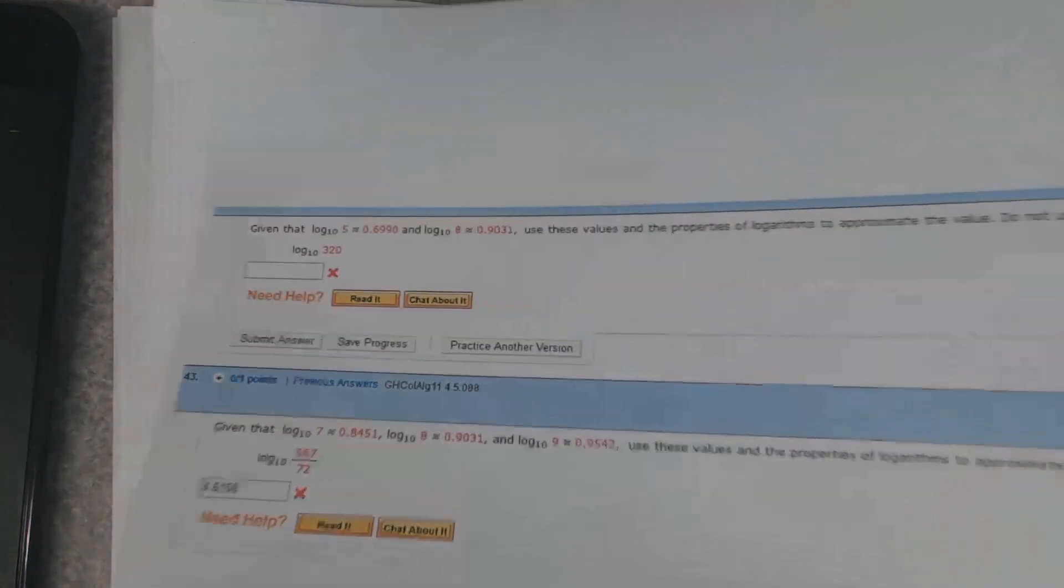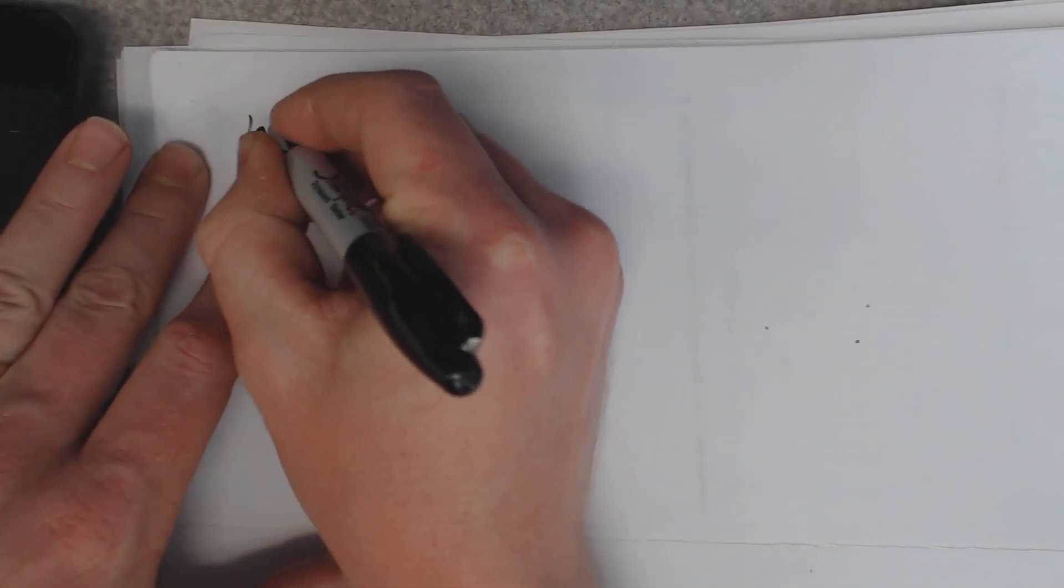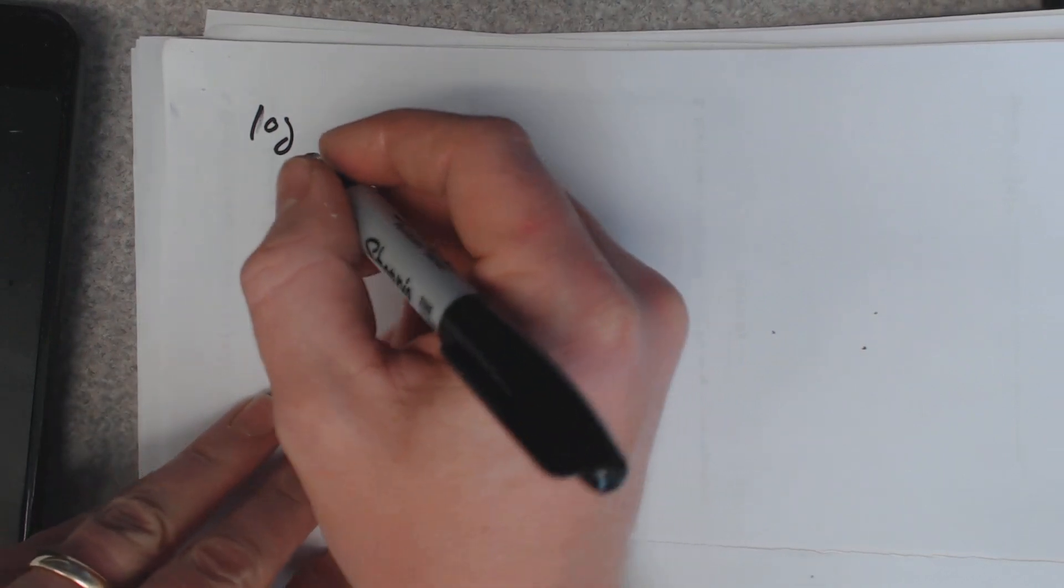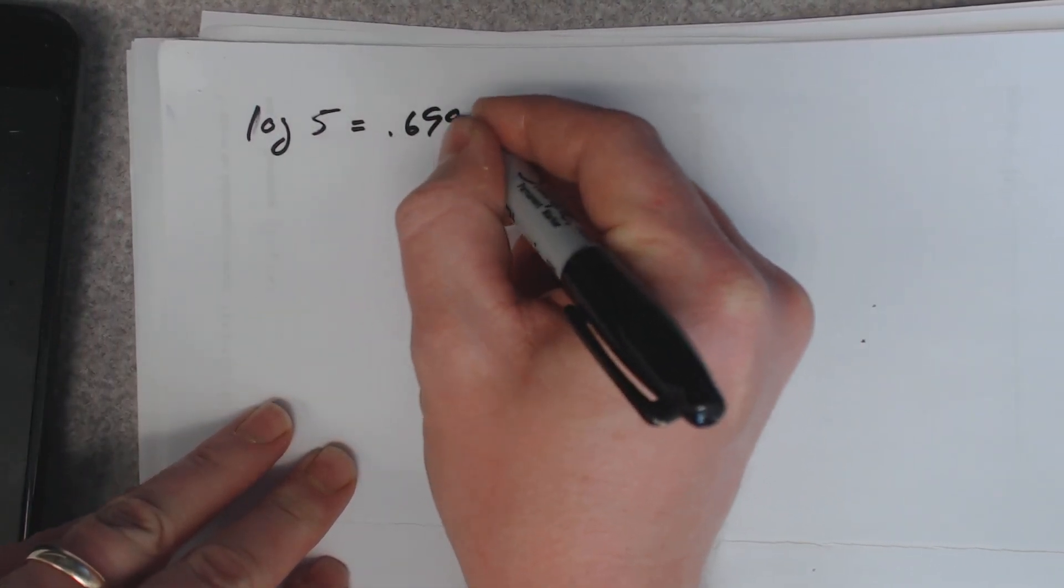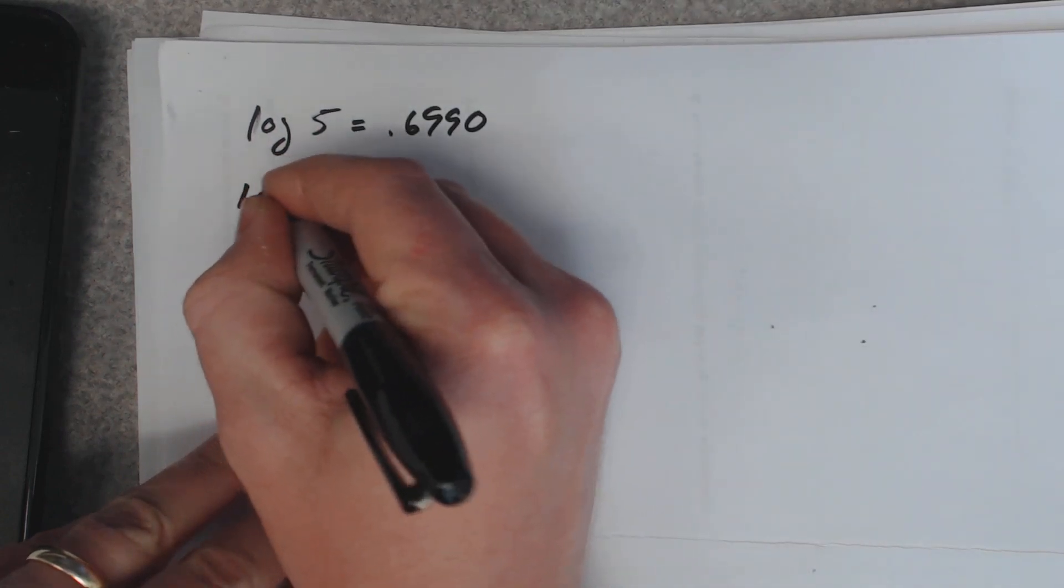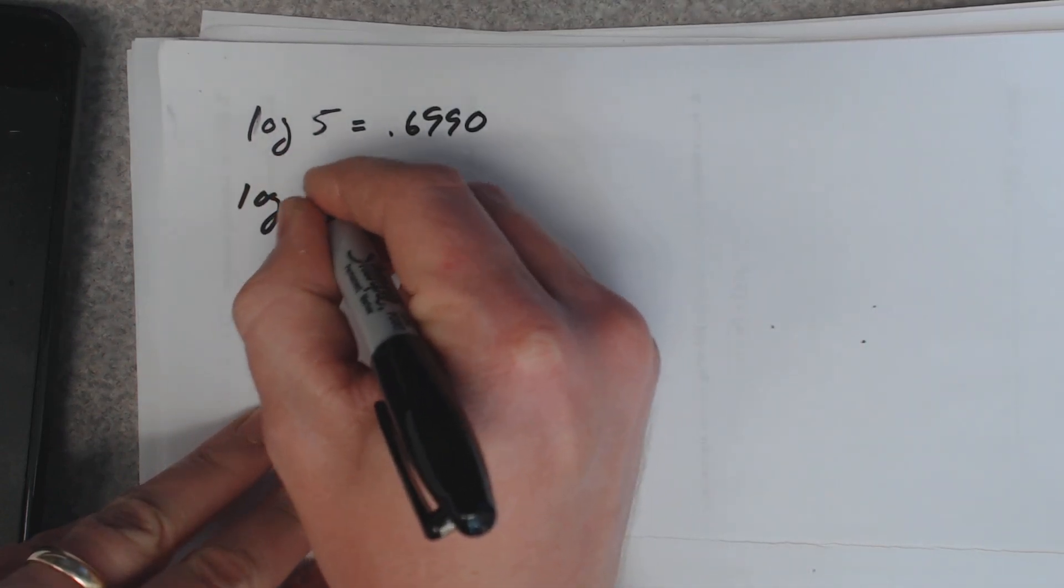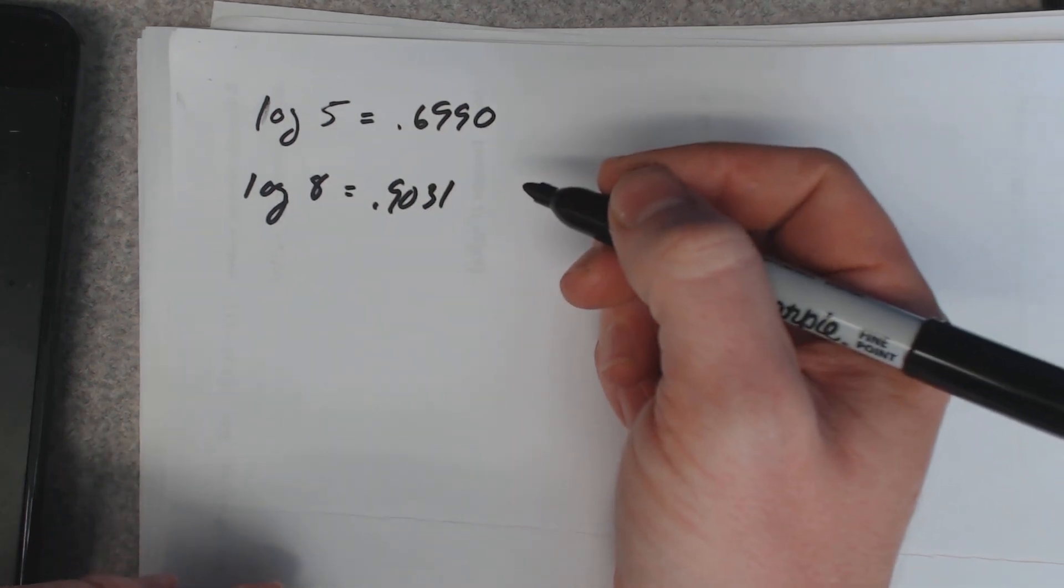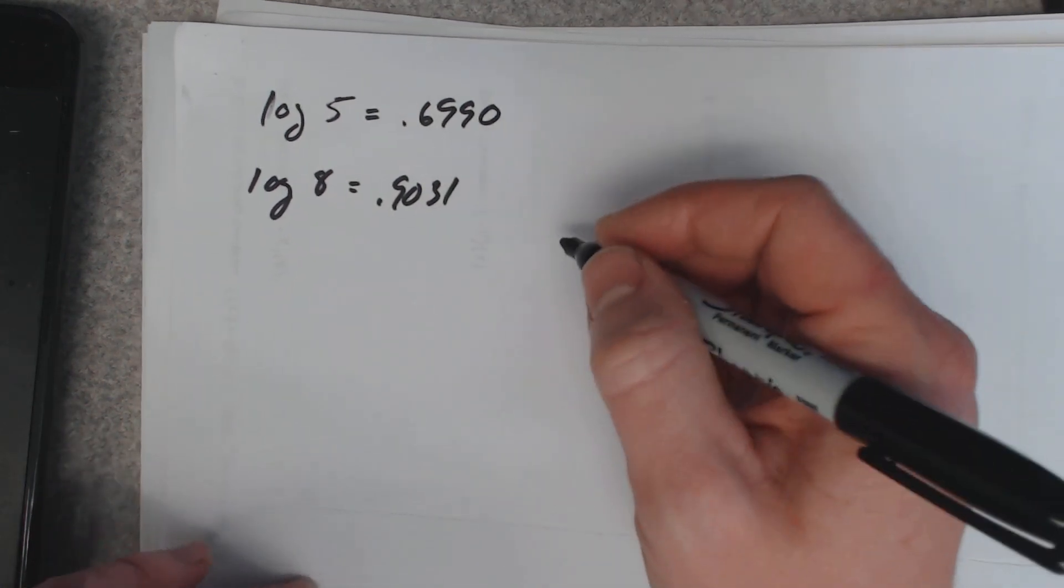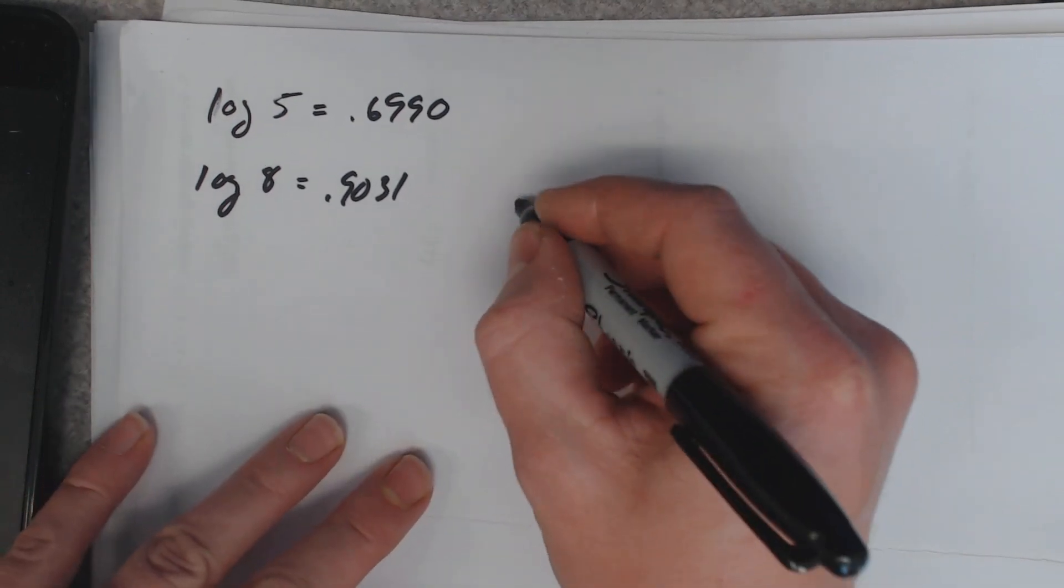To do these we're going to try to approximate, let's see what they give us. They give us that log base 10 of 5 is approximately 0.6990, they also say log of 8 is 0.9031. Those are both log base 10. They want you to approximate log base 10 of 320.